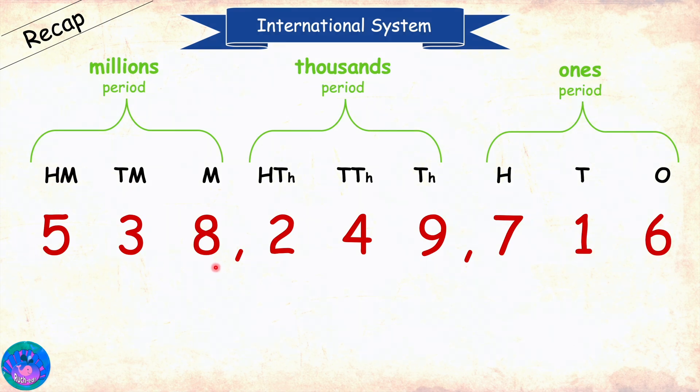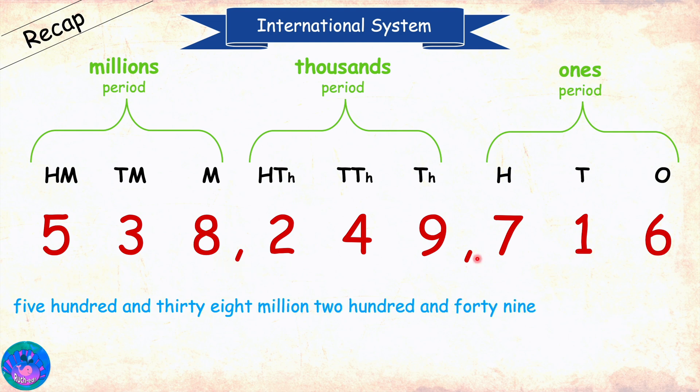So, this number is 538,249,716. After millions period, we have billions, then trillions, then quadrillions and so on. Very good, Sam.